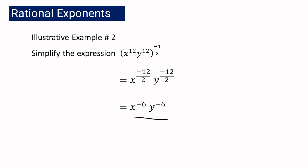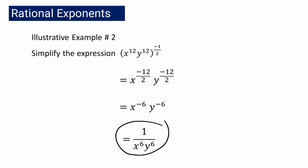And then we have a negative exponent, so we have to simplify it. Again, using the law of exponent, if you have a negative exponent, you are just going to get the reciprocal. That is why the answer should be 1 over x raised to 6, y raised to 6.